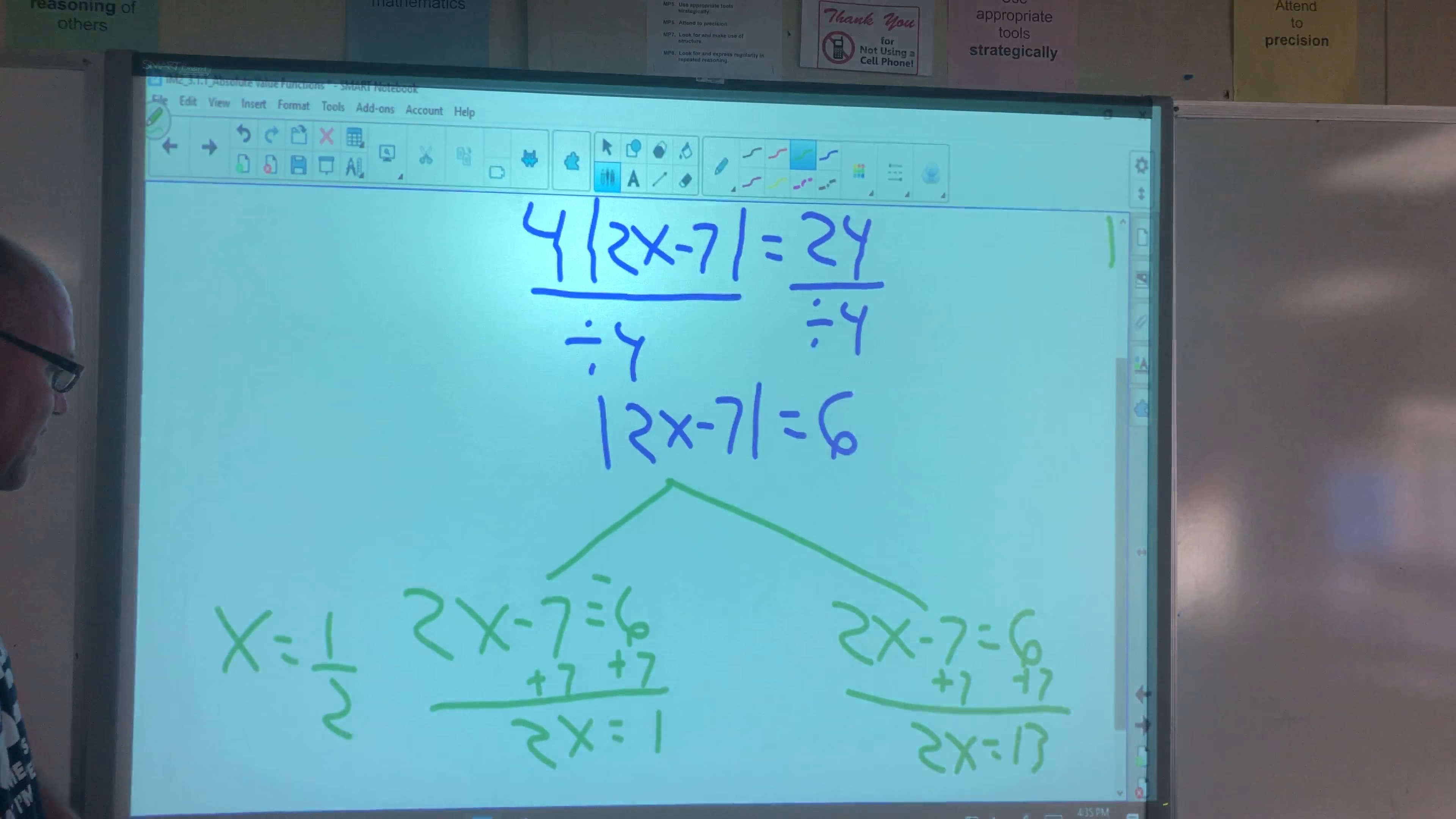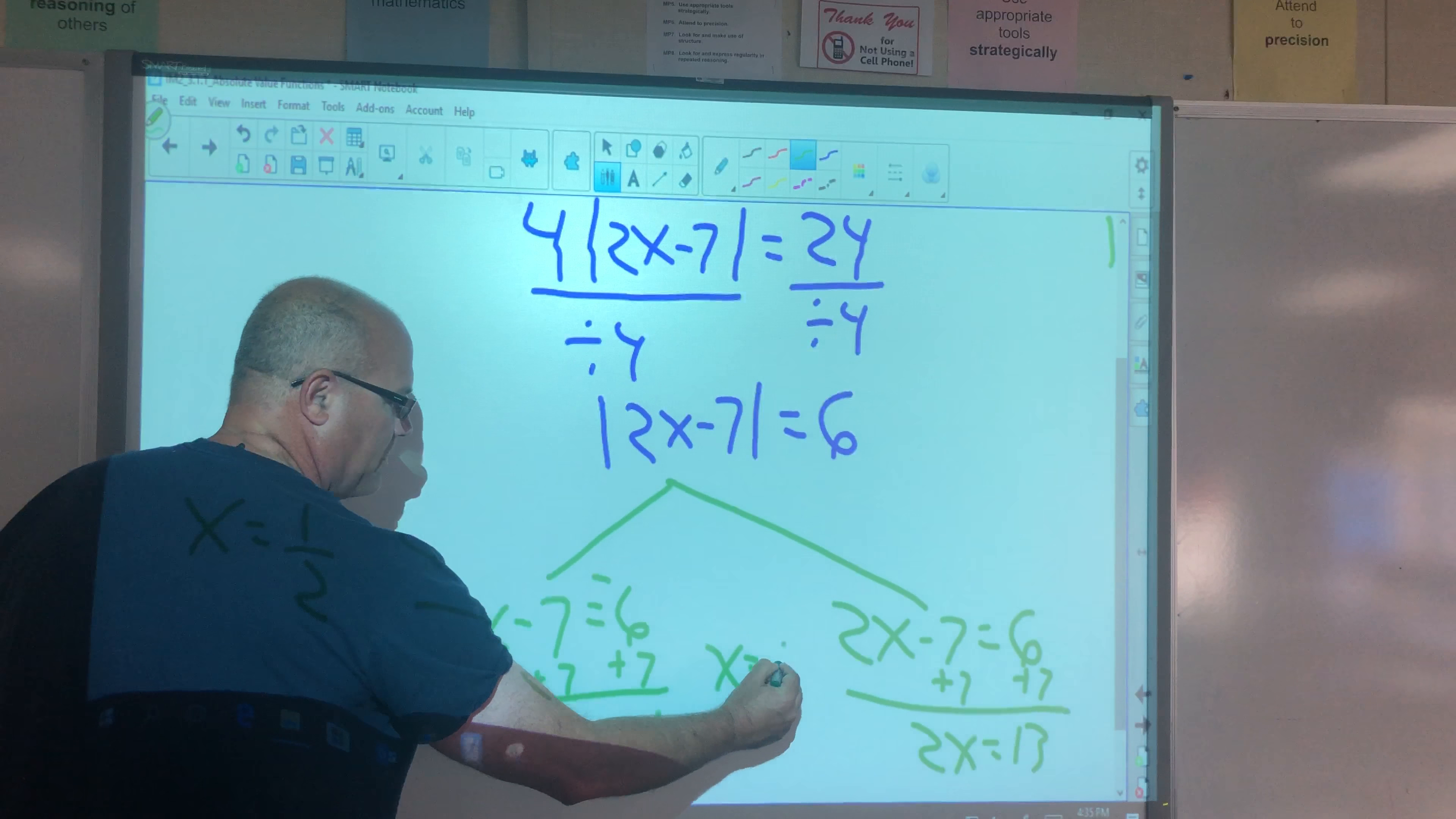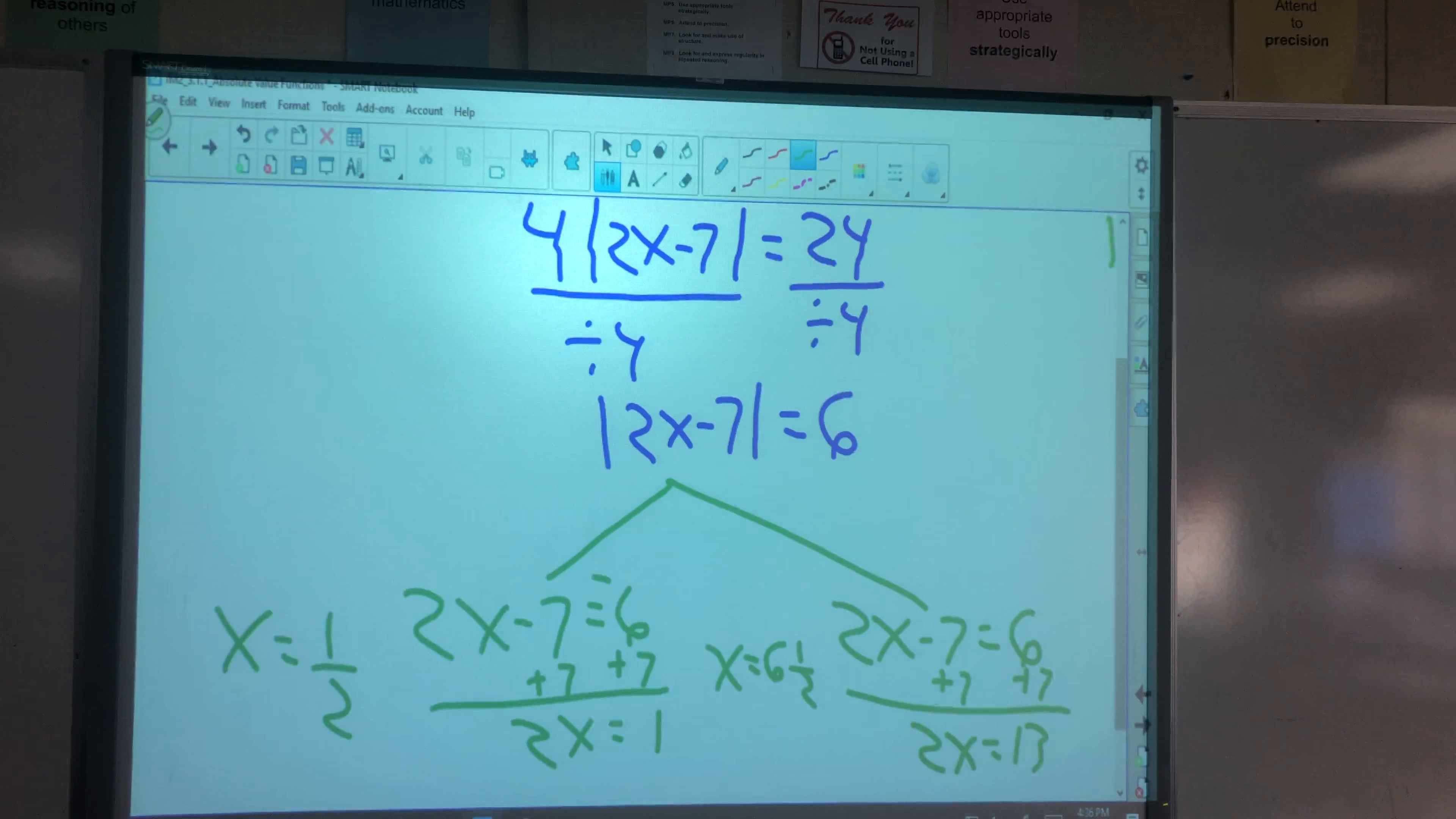2x equals 13. Divide that by 2, both sides, and we get x equals 13 halves, or I'm going to say 6 and 1 half. I could say 6.5 as well.